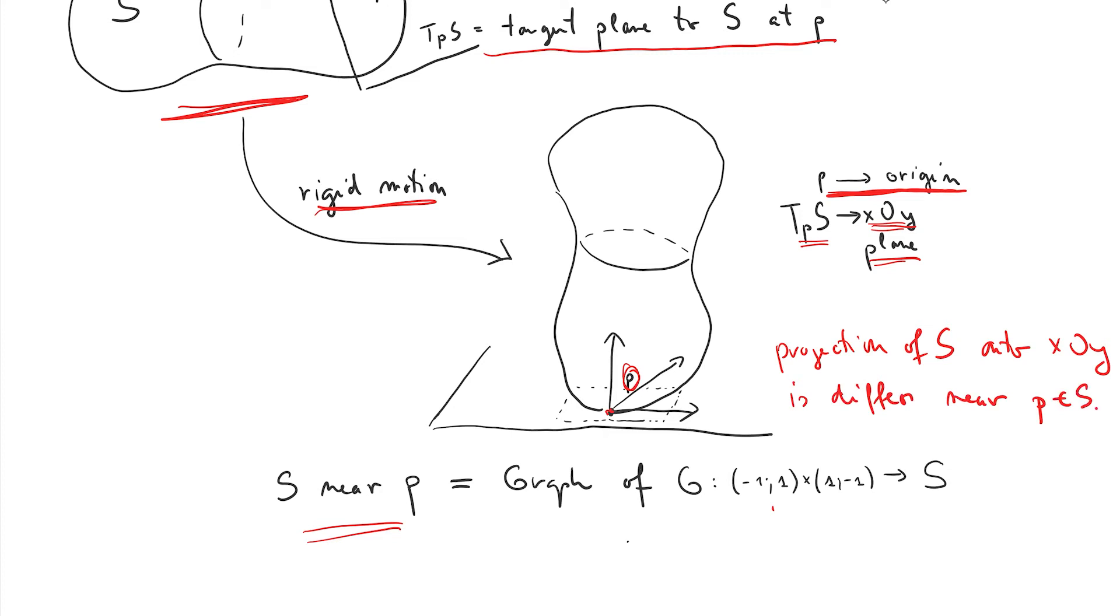And then a tangential chart will be nothing but the inverse of this projection. So S near P, I want it to be the graph of some function, capital G, from negative one times negative one, this interval times this interval onto S, where this rectangle is nothing but this rectangle that I try to sketch onto inside the tangent space. So we have these so-called tangential charts here for every point in S.